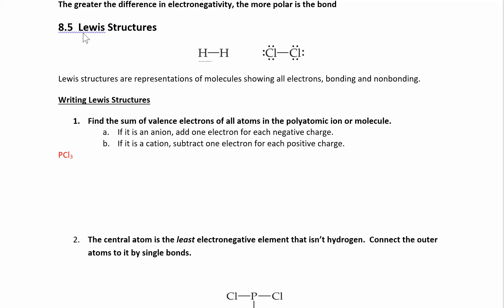So now we can look at some Lewis structures. When you're making a Lewis structure, you're looking at all the atoms involved in the molecule and trying to figure out where the electrons go — are they bonding electrons or non-bonding electrons? There's a very systematic way to figure out what the Lewis structure is. This is going to be important for chapter 9, because after we draw the Lewis structures, we'll be able to figure out the shape of the molecule.